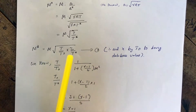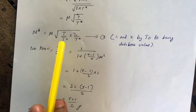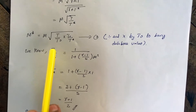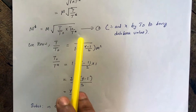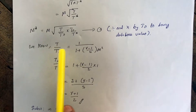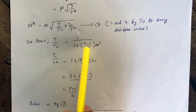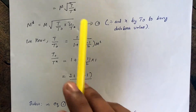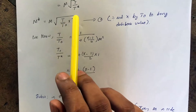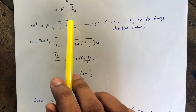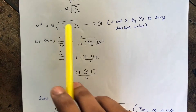We know the relation between static and stagnation conditions: T/T₀ = 1 / (1 + (γ−1)/2 × M²), where T₀ is the stagnation temperature. To incorporate this into our derivation, we multiply and divide by T₀, the stagnation temperature at that point.